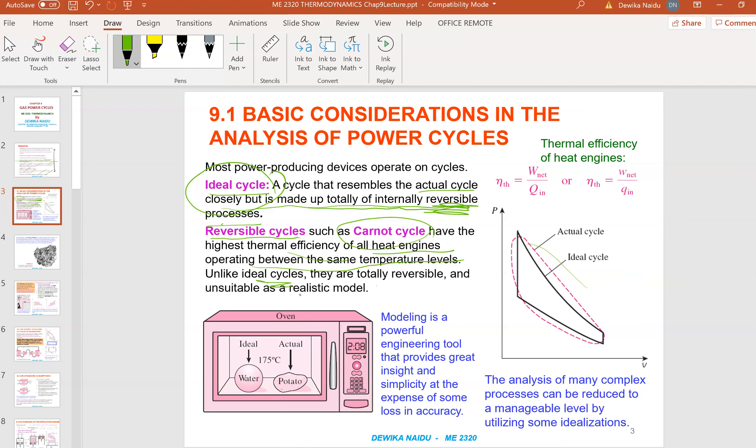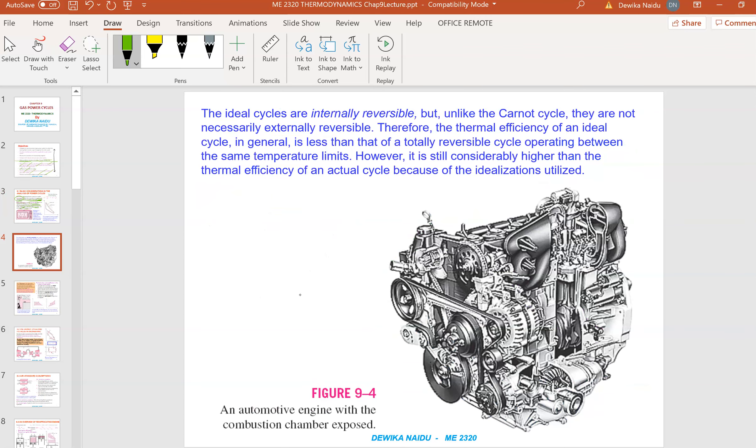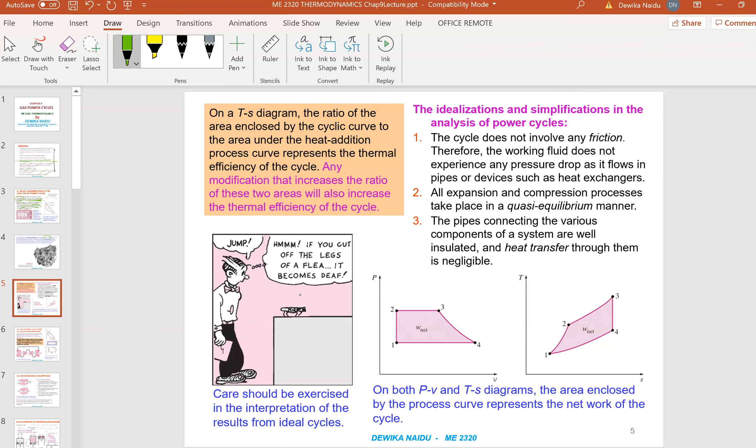Unlike the ideal cycle, they are totally reversible and unsuitable as a realistic model. That's the reason why we are actually looking at a Carnot cycle.